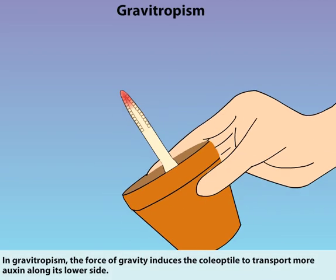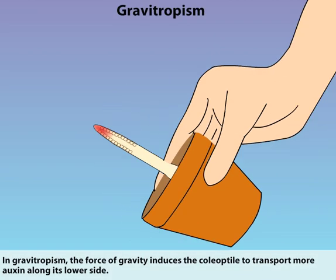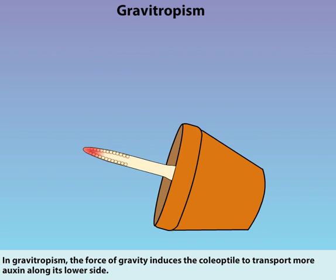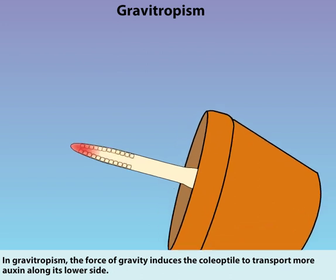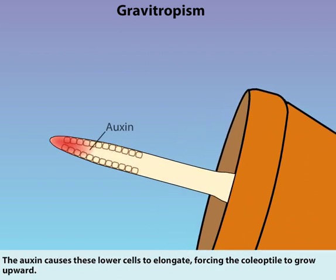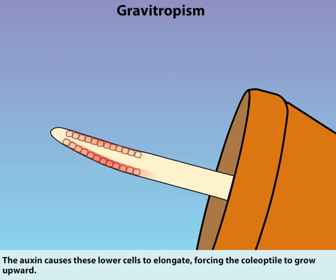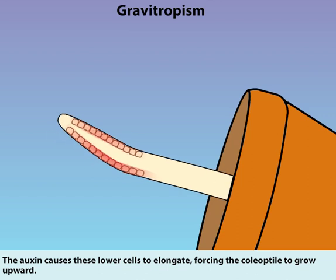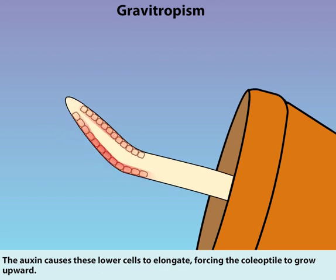In Gravitropism, the force of gravity induces the coleoptile to transport more auxin along its lower side. The auxin causes these lower cells to elongate, forcing the coleoptile to grow upward.